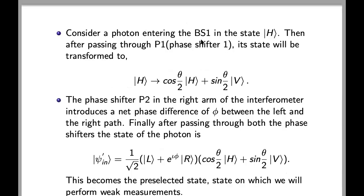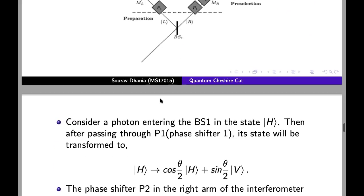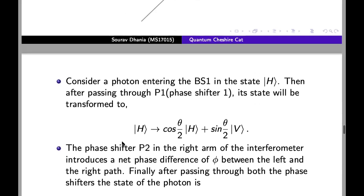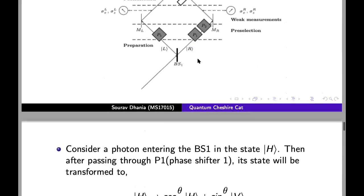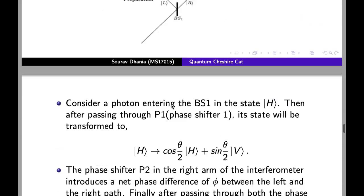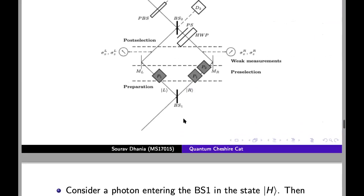Consider a photon entering the beam splitter 1 in the state h. So it is initially in the horizontal polarization. Then after passing through the phase shifter p1, its state will be transformed to this state; polarization is rotated with the angle theta. Then afterwards it will go through phase shifter p2. The phase shifter p2 in the right arm of the interferometer introduces the net phase difference of phi between the left and the right path.